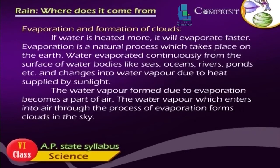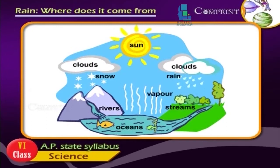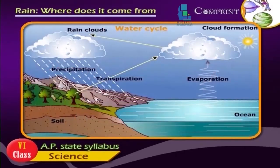If water is heated more, it will evaporate faster. Evaporation is a natural process that takes place on the earth. Water evaporates continuously from the surface of water bodies like seas, oceans, rivers, ponds, etc., and changes into water vapour due to heat supplied by sunlight. The water vapour formed through evaporation becomes part of the air and forms clouds in the sky.